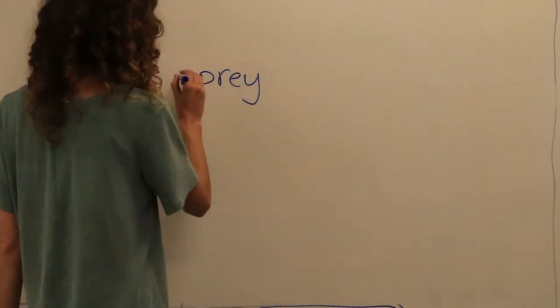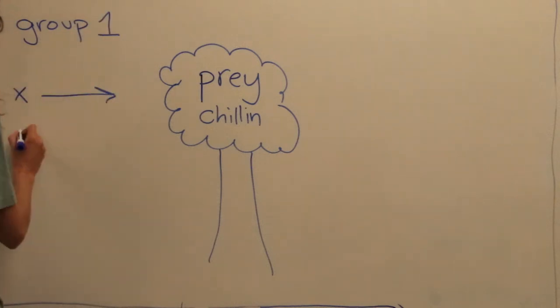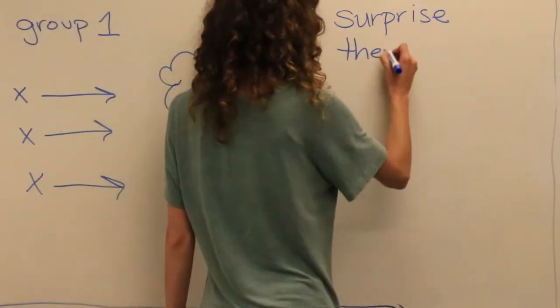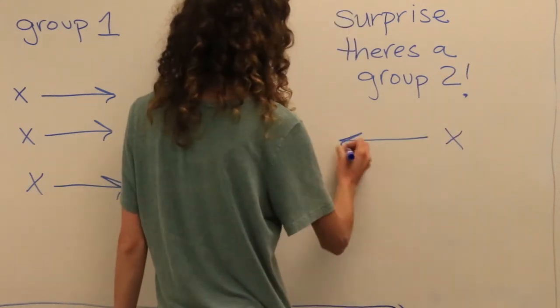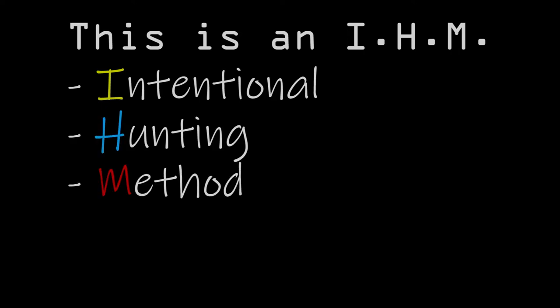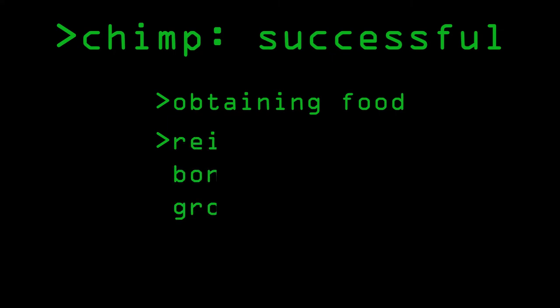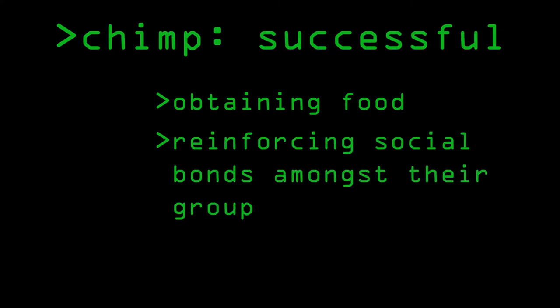They create well-thought-out strategies. Some of the chimps approach the prey and then the other group of chimps come from behind for a surprise attack. What does that end in? A tasty snack and some bro times for the chimps. This is an intentional hunting method that works very well and the chimps are successful in obtaining food and reinforcing social bonds amongst their group.